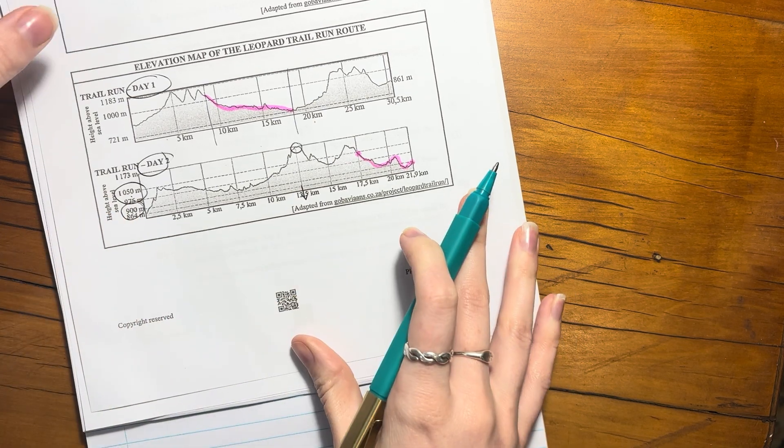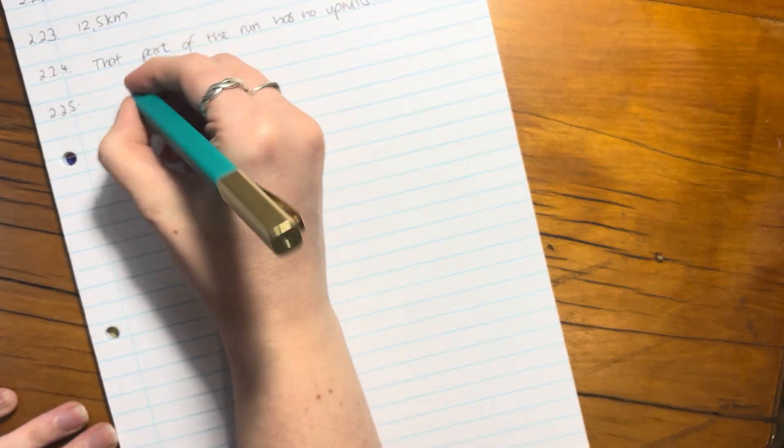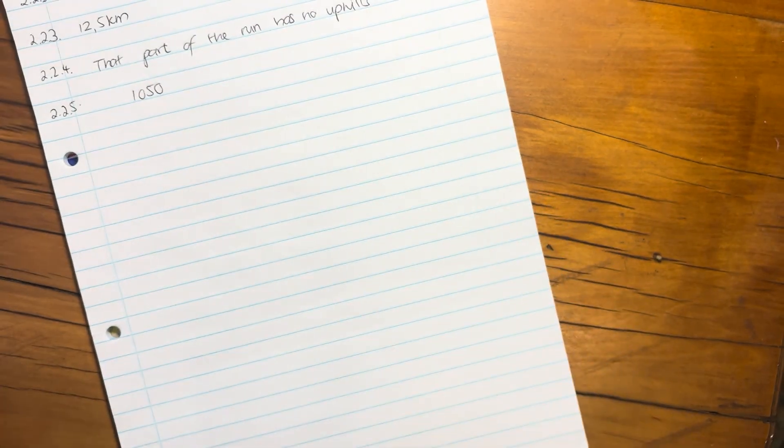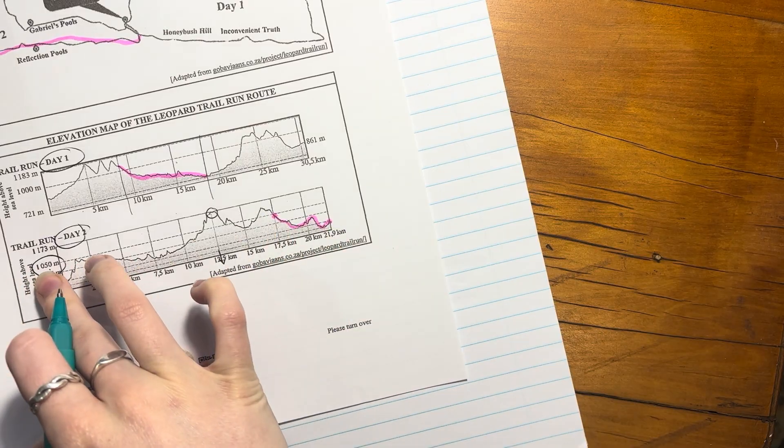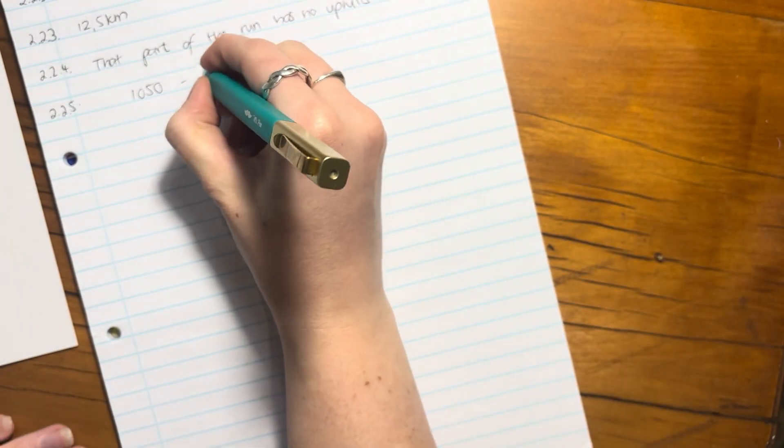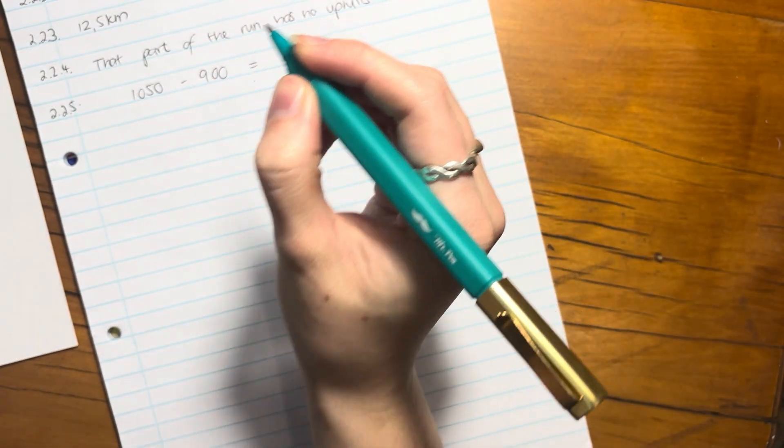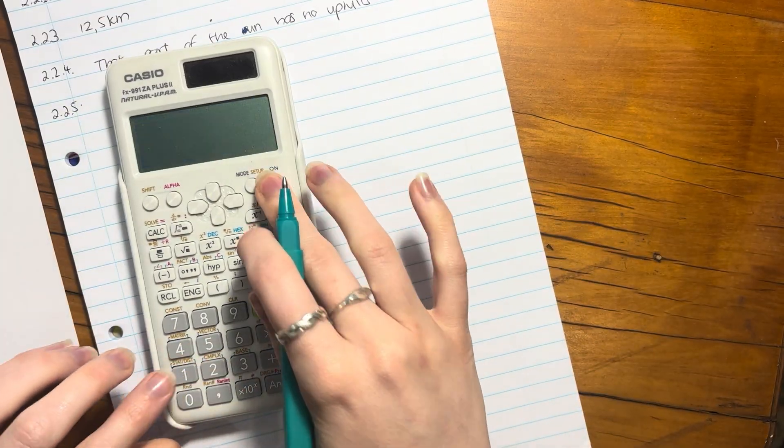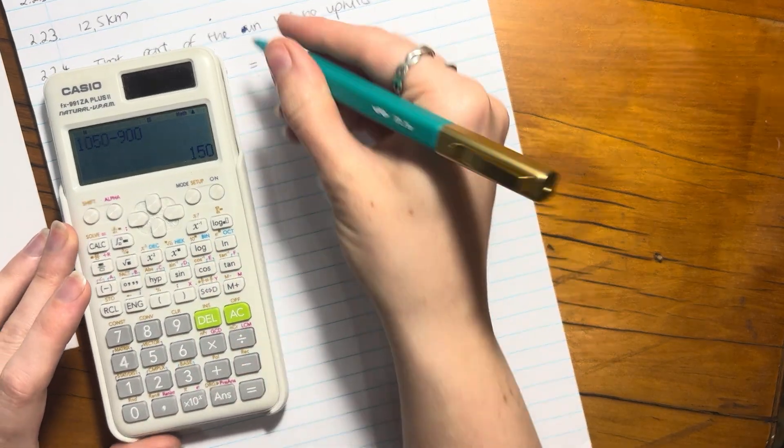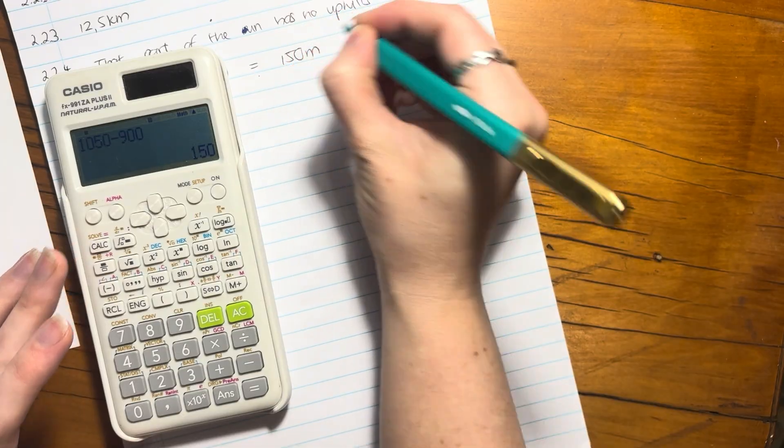We say, okay, what's the difference between the height at which he was at 17.5 kilometers and the height he was at the end, and let's see whether what he said was true. The height at 17.5 kilometers was 1050, and the height at the end of the race was 900. That's 150 meters. Let's see what his claim was, because remember at the end of this you have to say is he correct or not.